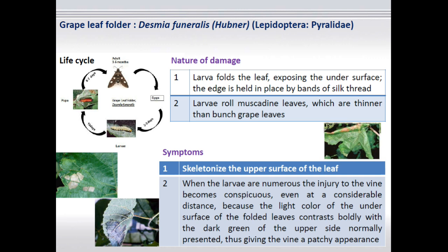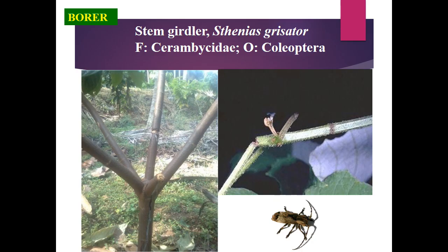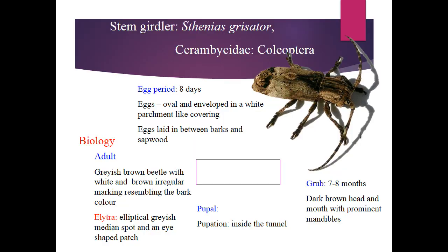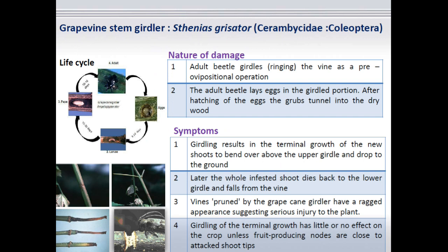Leaf folder is an occasional minor pest. The larvae have a habit of folding the leaves and then scraping the internal content. In severe form, it sometimes affects photosynthesis activities and the development of the plant. The next one is stem girdle, which in some cases can cause serious damage, but it is again an occasional pest only. This beetle has peculiar symptoms and will affect inflorescence development and also fruit setting.